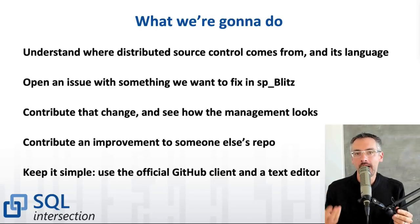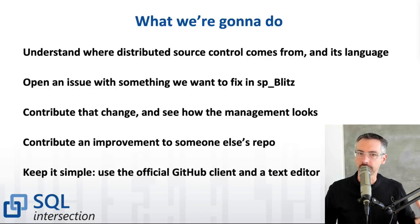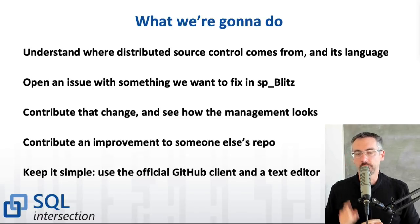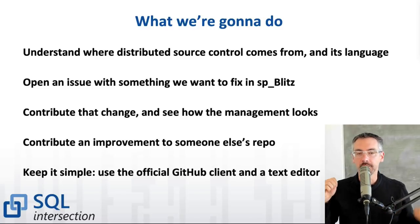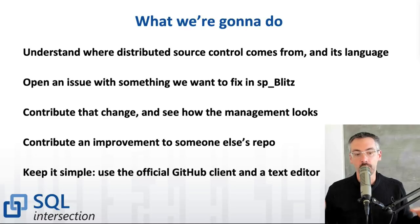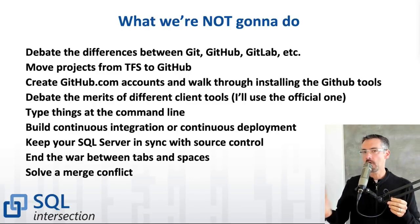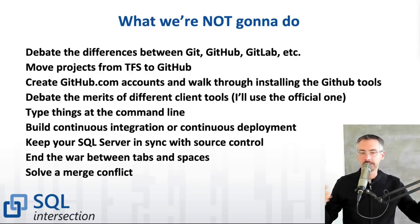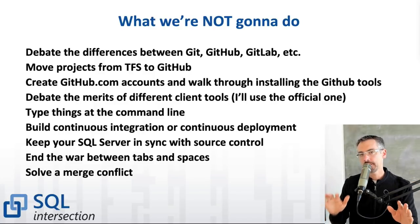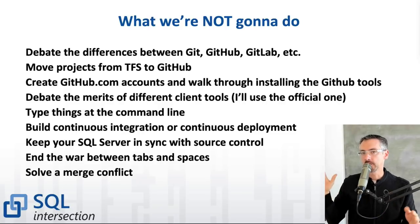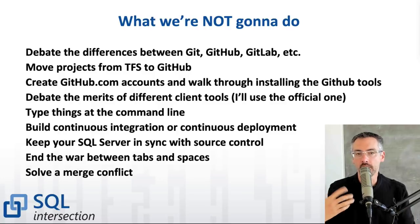I'm going to explain why distributed version control works the way it does so it'll make more sense when we're doing pushes, merges, pull requests, and all that. I'm going to open an issue for something I want to fix in one of the First Responder Kit tools, make the change, and check it in. Then I'll look at what it takes to contribute to someone else's repo. I'm going to show you just the bare minimum to get started, plus links to learn your next steps — it takes weeks to really feel comfortable with GitHub.